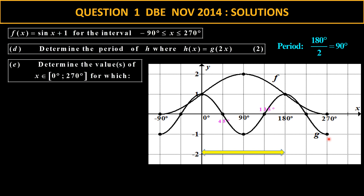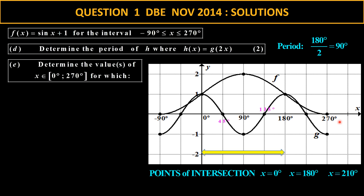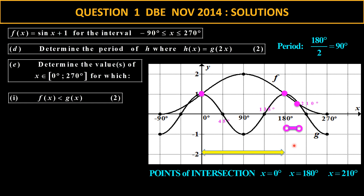Now we determine the values of x. We look at values between 0 and 270, focusing only on the positive side of the x-axis. We need the points of intersection from our general solution — you can see where the graphs intersect. For f(x) less than g(x), we follow where f is below g. The f is above, then below between those two intersection points, then above again. The below part is between 180 and 210.